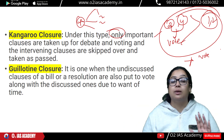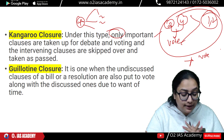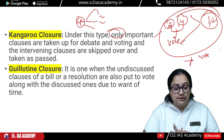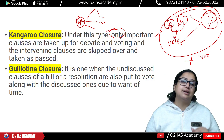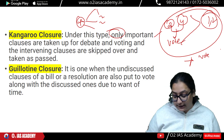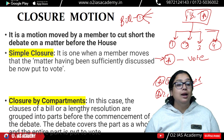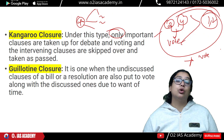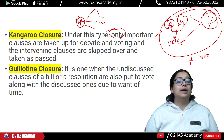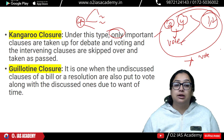The fourth type is Guillotine Closure. It is used when undiscussed clauses of a bill or resolution are also put to vote along with the discussed ones due to want of time. Because of time shortage, even clauses that have not been discussed are put to vote along with those already discussed. So all clauses — discussed and undiscussed — are voted upon together.